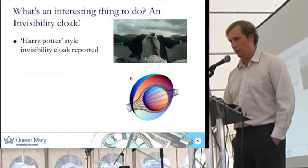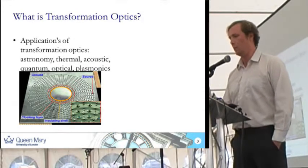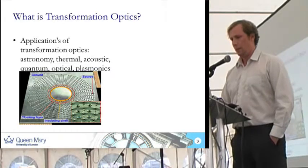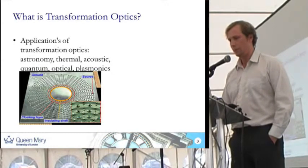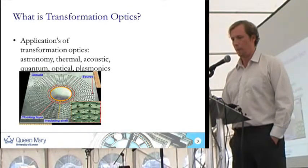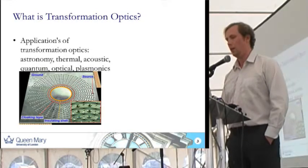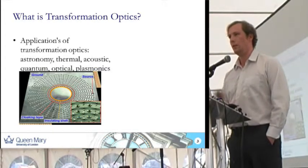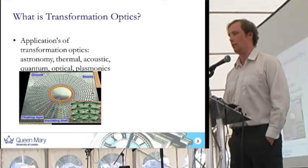I wasn't able to show you the code, which is quite interesting. It's got lots of applications — you can design thermal cloaks where you're cloaking something from heat. You can have mechanical cloaks with negative compressibility. I've mentioned satellite communications — you can transform parabolic dishes to flat dishes. You can also transform curved lenses to flat lenses, saving space and cost for optical engineers.